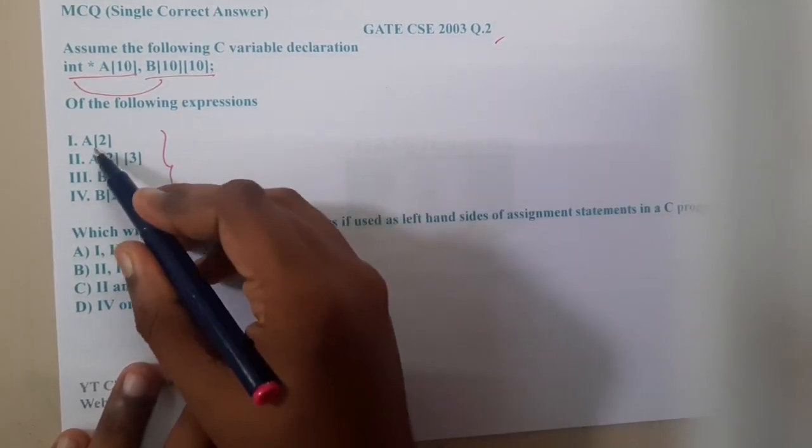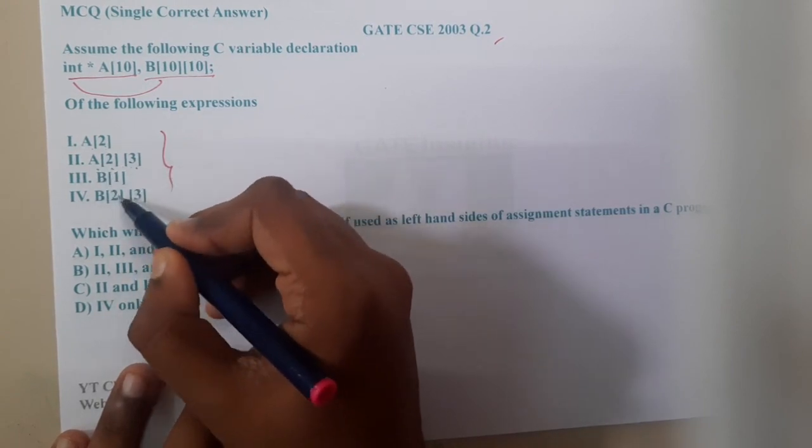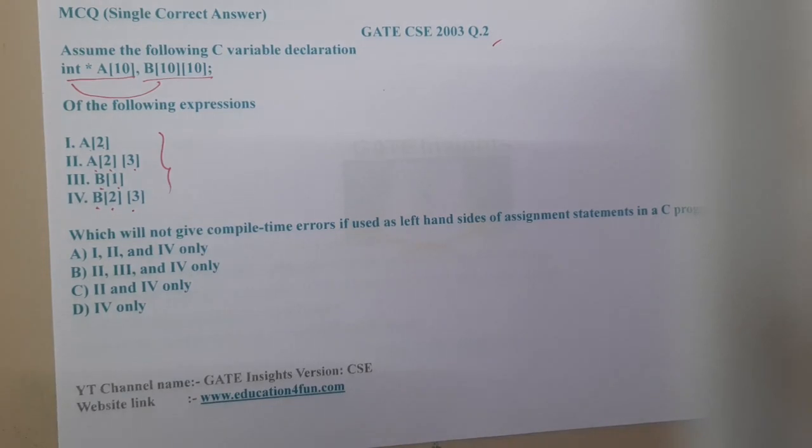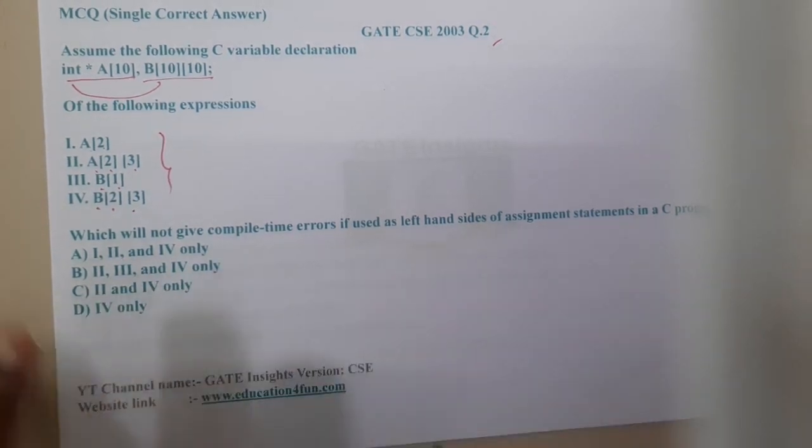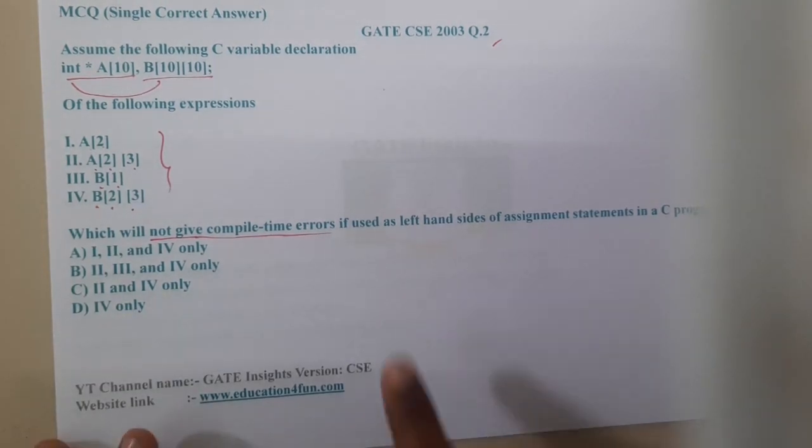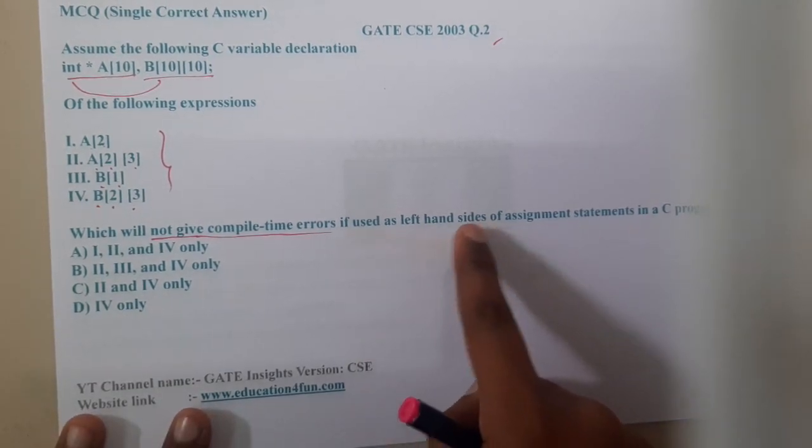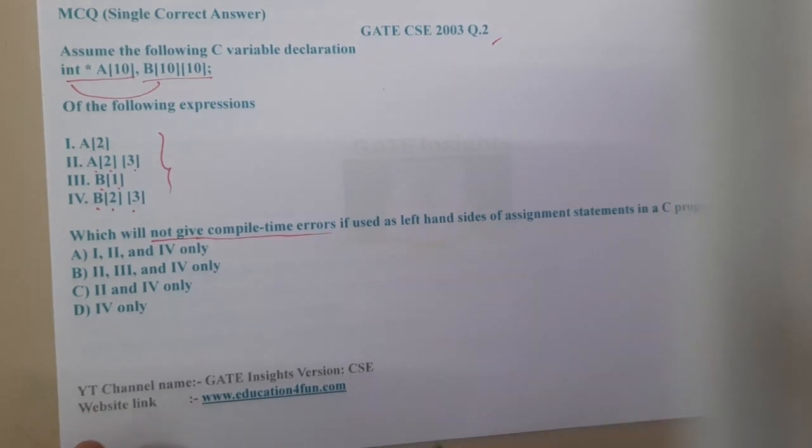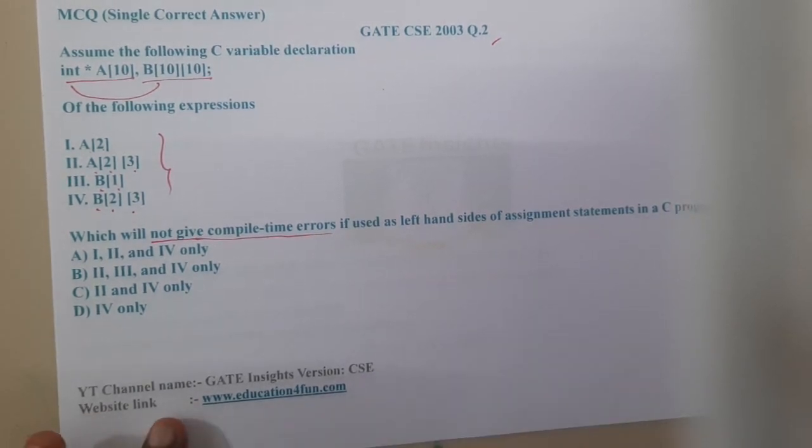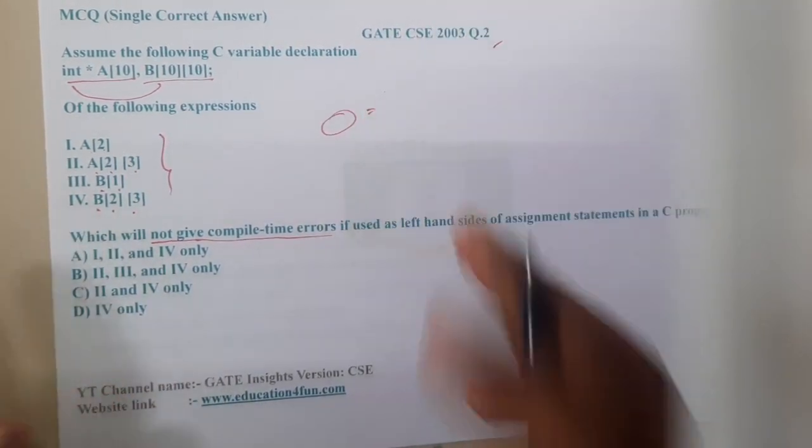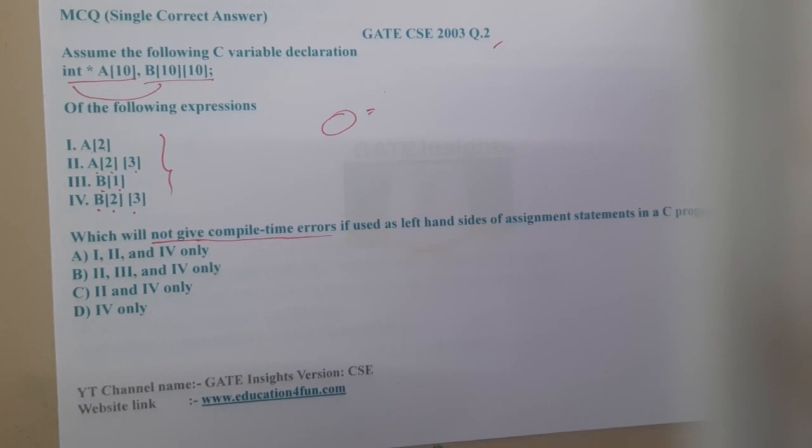Now the question is: of the following expressions, they give four expressions - a[2], a[2][3], b[1], b[2][3]. The question is: which will not give compile-time errors if used as left hand side of assignment statement in C program? I think this question seems to be really interesting. If you are using these values on the left side, which of the following will not give error is the question.